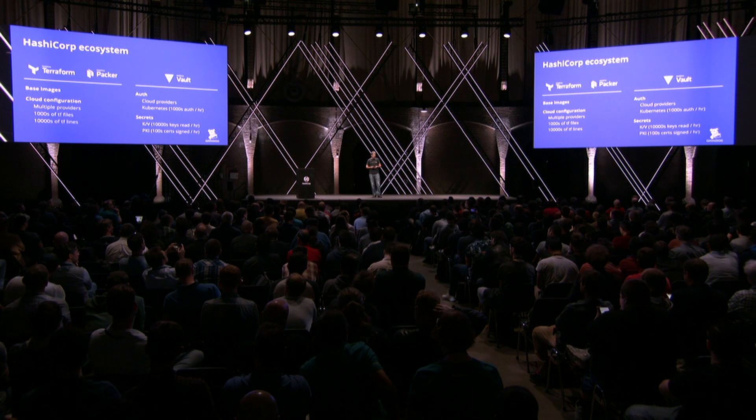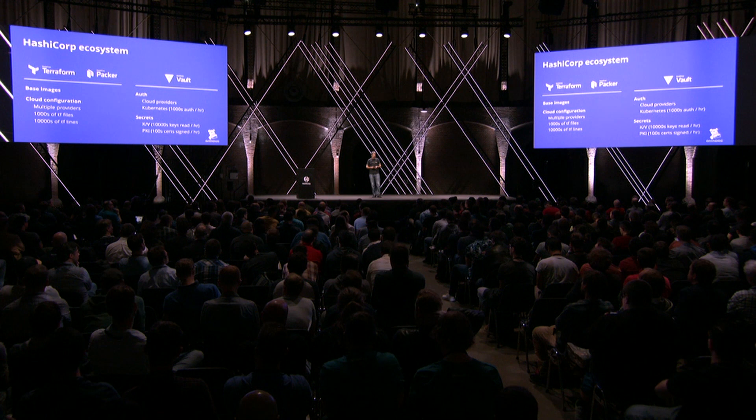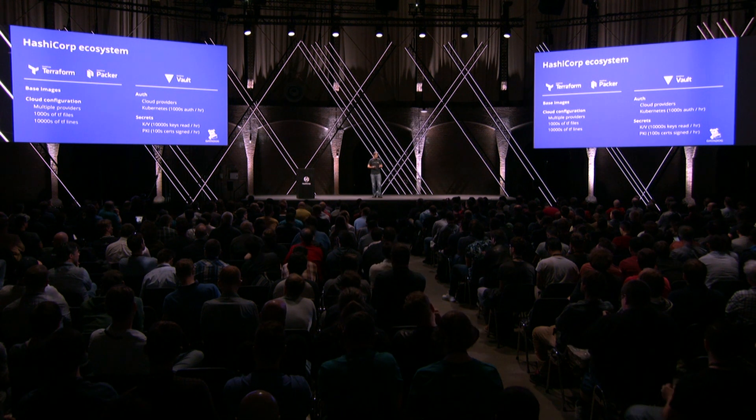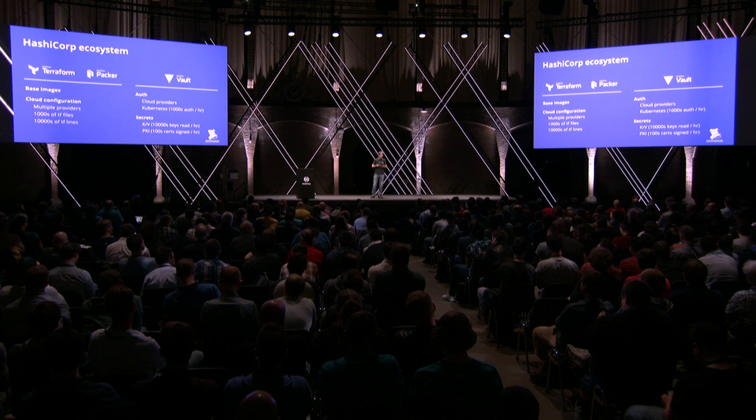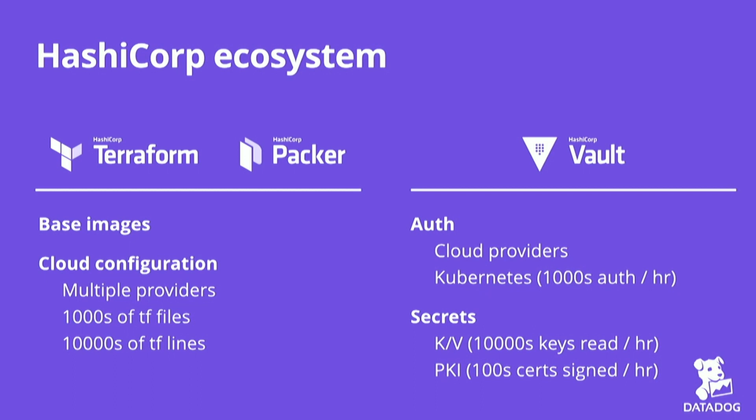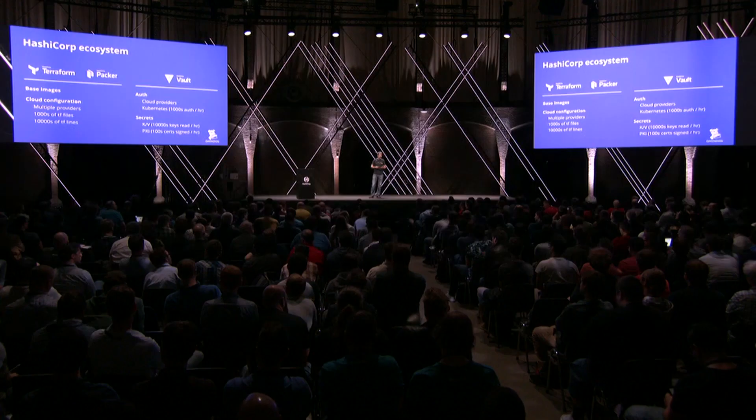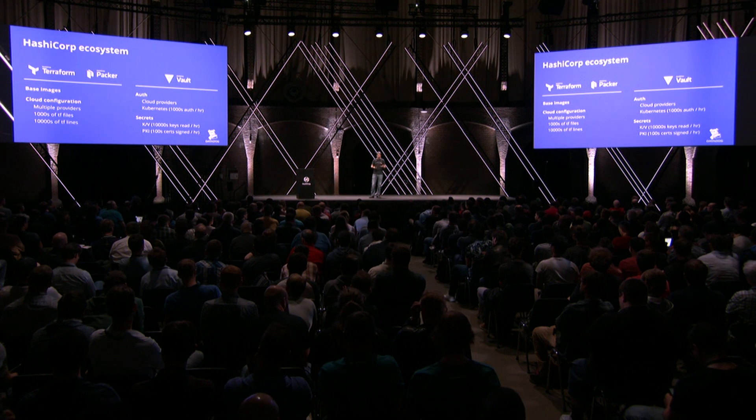We also use Vault pretty heavily for secret management. Just to give you an idea of size and scale in our Kubernetes clusters: we use Vault to get secrets and to provide PKI services. All our control plane services retrieve certificates using Vault. We do around 100 certificate signatures per hour. And we also heavily read secrets from Vault inside Kubernetes, because every time a pod starts, it authenticates using its Kubernetes service account, gets a token from Vault, and then retrieves secrets.